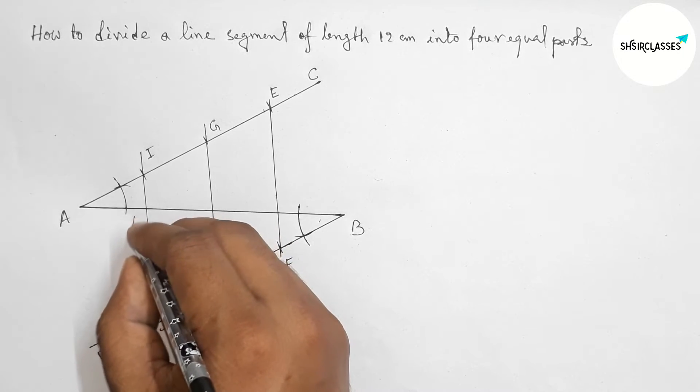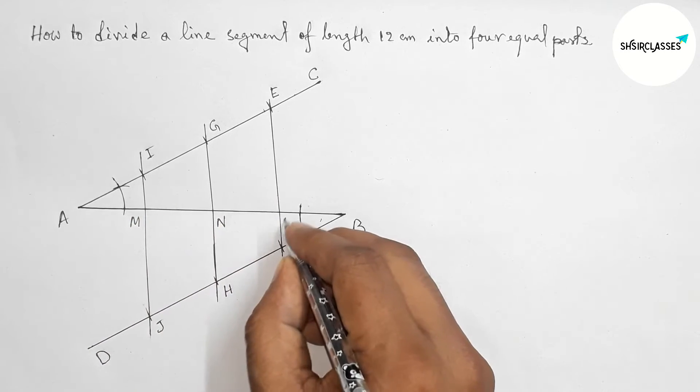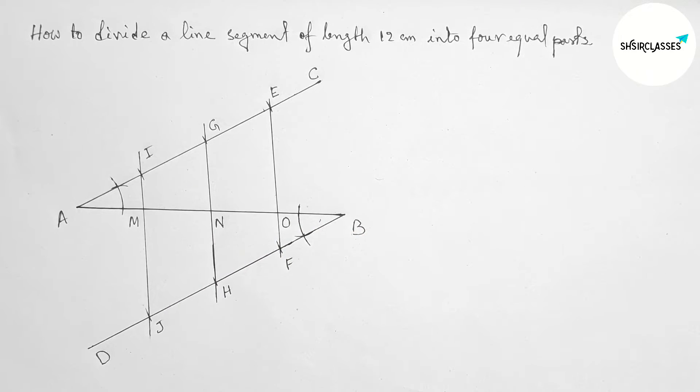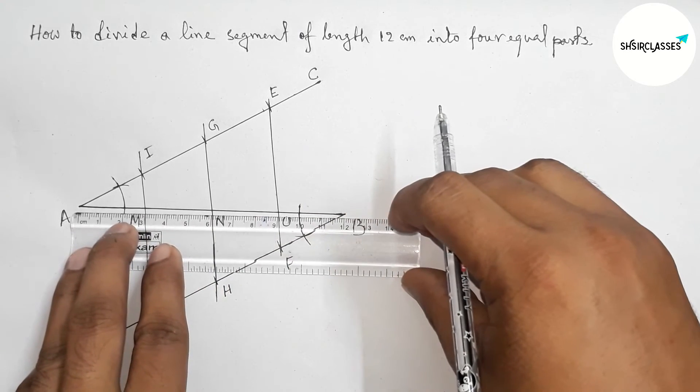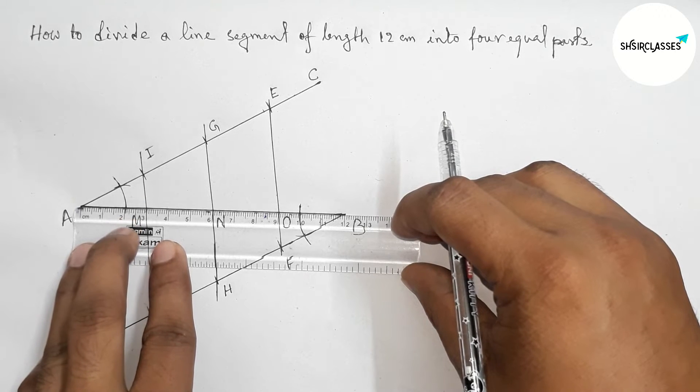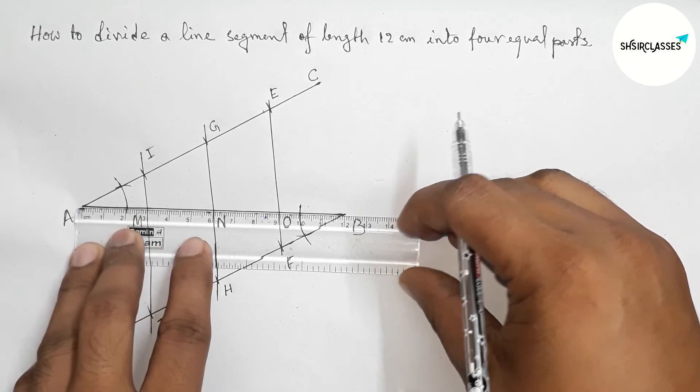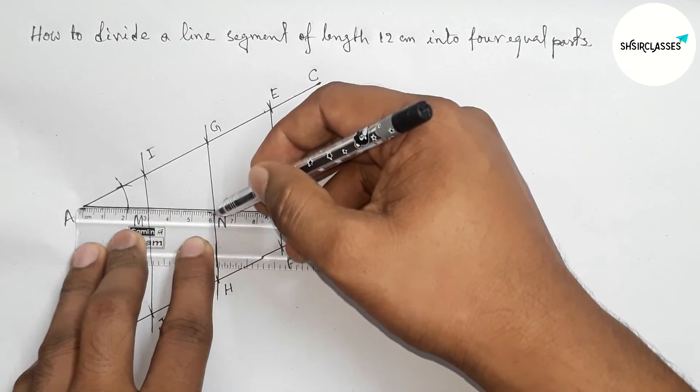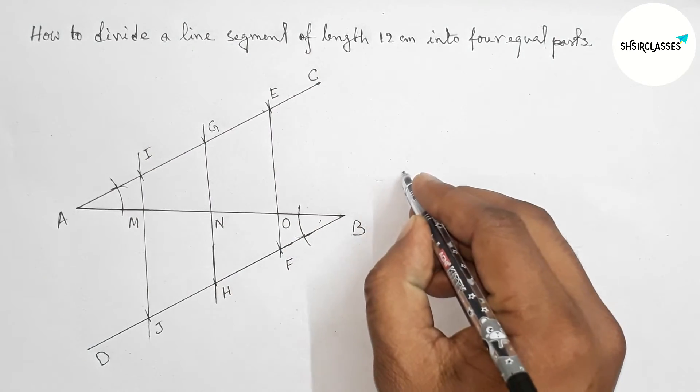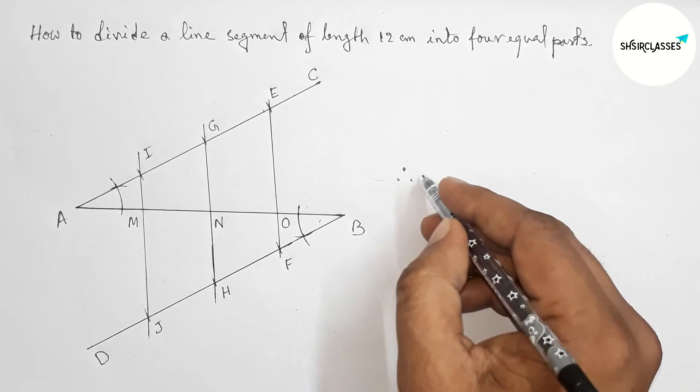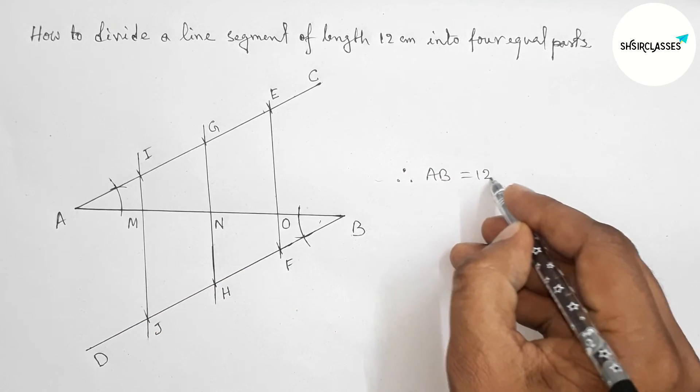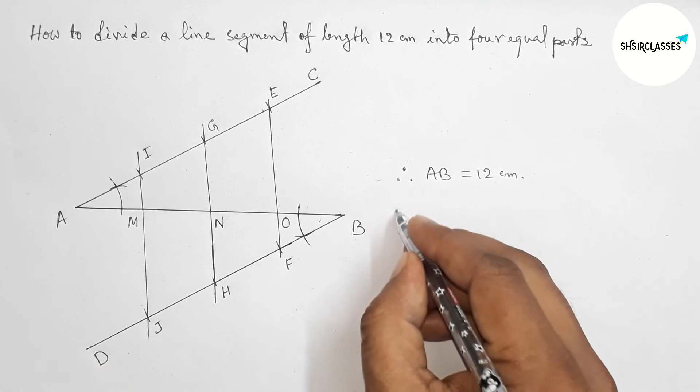Now I'm going to check whether it is perfect or not. So you can see this is so perfect. So three, six, nine, twelve. Therefore here the line segment AB, this is 12 centimeter.